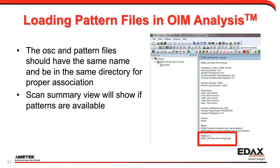Once we have these patterns, we can bring them into OIM Analysis. When we open the OSC file, if there's a file with the same name and a pattern format extension in the same directory, it will recognize that the two are associated and show in the scan summary that patterns are available — shown in the red box in the interface. You're then able to perform functions that are tied to having saved patterns available.